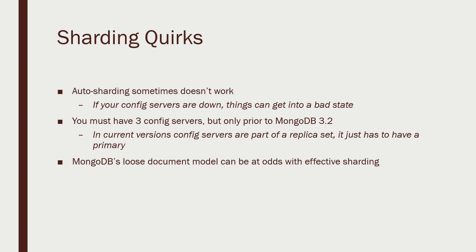It used to be the case that you had to have exactly three config servers, but that limitation was fixed starting with MongoDB 3.2. Config servers today can be deployed as a replica set of their own, which gives you a lot more flexibility. Also, even though MongoDB offers a very loosely defined document model, it doesn't mean your document model should be loose. If you're going to be doing sharding and handling big data, you need a single primary key that is unique to each document to shard on. Technically you can have duplicate shard keys, but it's recommended to choose a field with high cardinality.